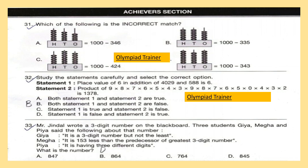Question 33: Mr. Jindal wrote a 3-digit number on the blackboard. Three students Jiya, Megha, and Pia said the following: Jiya said it is a 3-digit number but not the least. Megha said it is 153 less than the predecessor of the greatest 3-digit number. Pia said it has 3 different digits. What is the number?